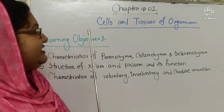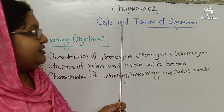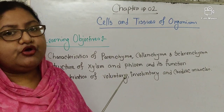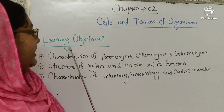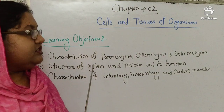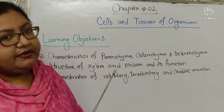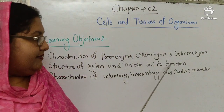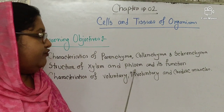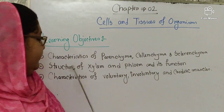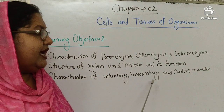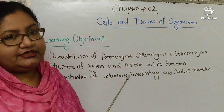Today I will discuss Chapter 2. The name of this chapter is Cells and Tissues of Organism. My learning objectives are the characteristics of parenchyma, collenchyma, sclerenchyma, structure of xylem and phloem and their functions, then characteristics of voluntary, involuntary and cardiac muscle.